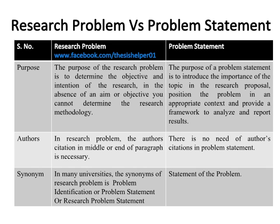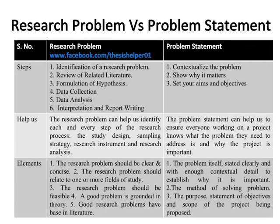In many universities, the synonyms of research problem are problem identification, problem statement, or research problem statement, while the synonym of problem statement is statement of problem. Identification of the research problem is the first step in the research process, while the problem statement is not the first step in the research process.